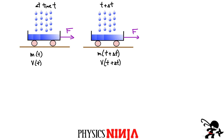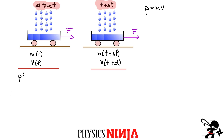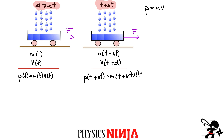The first thing we want to do is look at what happens to the momentum at time t versus at time t plus delta t. Our definition of momentum is always mass multiplied by velocity. Everything is moving to the right, which we take as positive. So the momentum at time t is simply m(t) multiplied by v(t). The momentum at t plus delta t is m(t + Δt) multiplied by v(t + Δt).